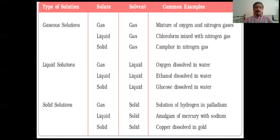Solid dissolved in gas — we know there are volatile solids. For example, camphor. When camphor evaporates, it forms a solution with air or nitrogen. That is an example of a solid-in-gas type solution.